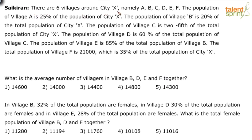There are six villages around city X, namely A, B, C, D, E, F. The population of village A is 25 percent of X, population of B is 20 percent of X, population of C is two-fifth of X, population of D is 60 percent of C, population of E is 85 percent of B, and population of F is 21,000, which is 35 percent of total population of X. All these populations are interlinked.